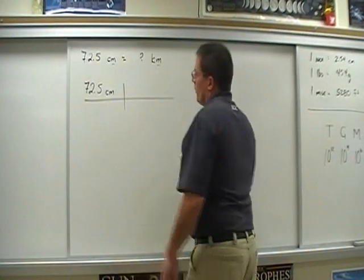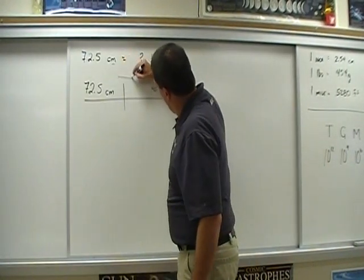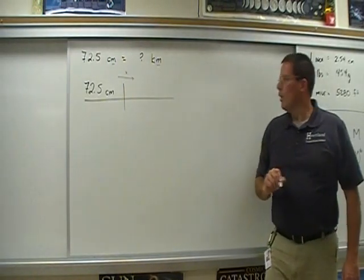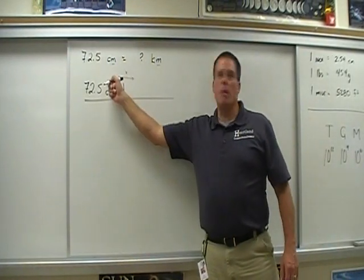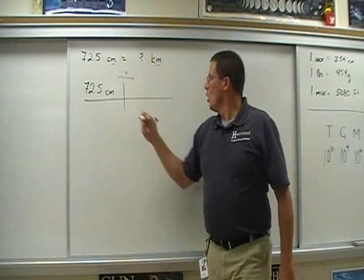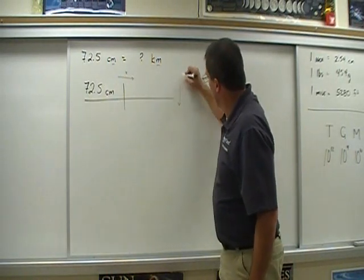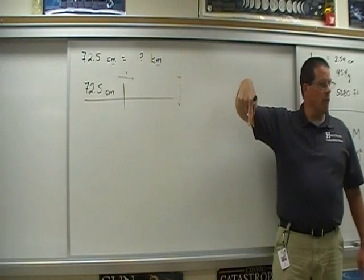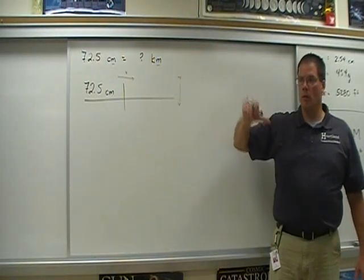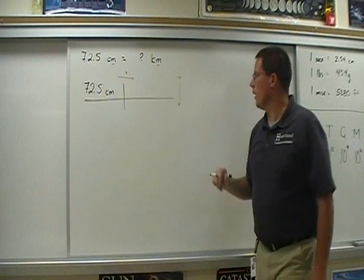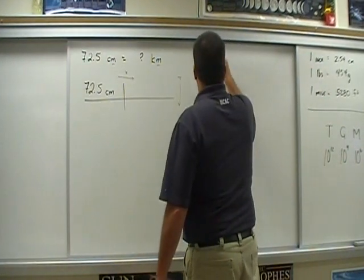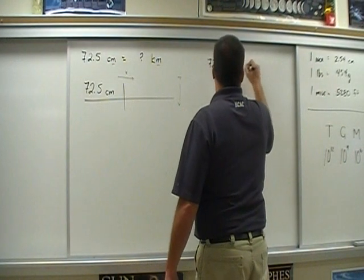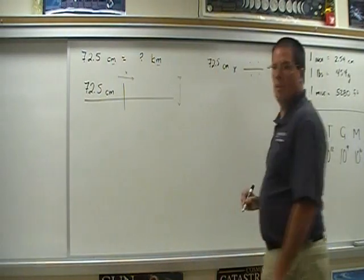What this is: every time I go horizontal, I'm multiplying. So whatever's in this box, I multiply by that. When I go vertical, I'm dividing. So when I go horizontal, I'm multiplying; when I go vertical, I'm dividing. It's also like saying I could do 72.5 centimeters times whatever numbers we get next. I don't care how you do it — wherever you see the times, that's what this intersection represents. Just as long as you're showing me all of your work and all of your units, I'll be happy.